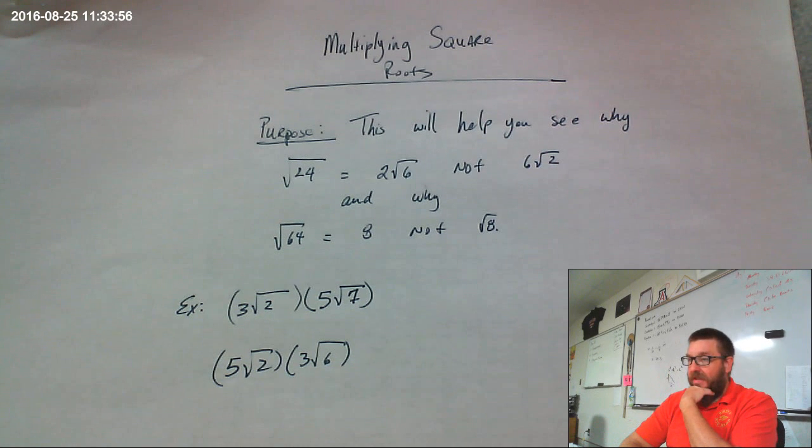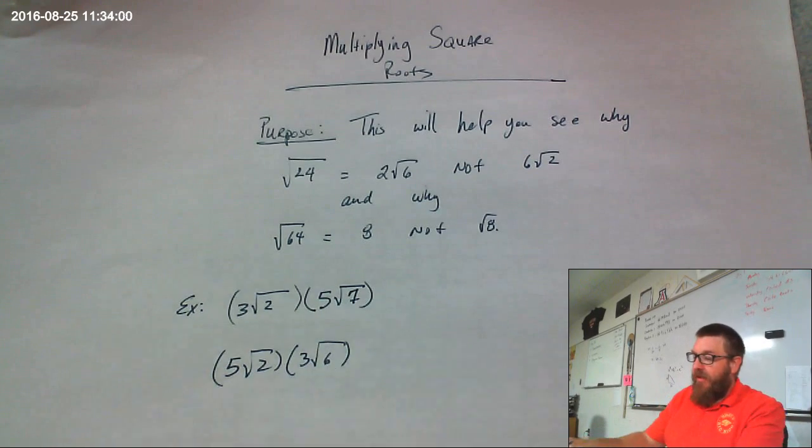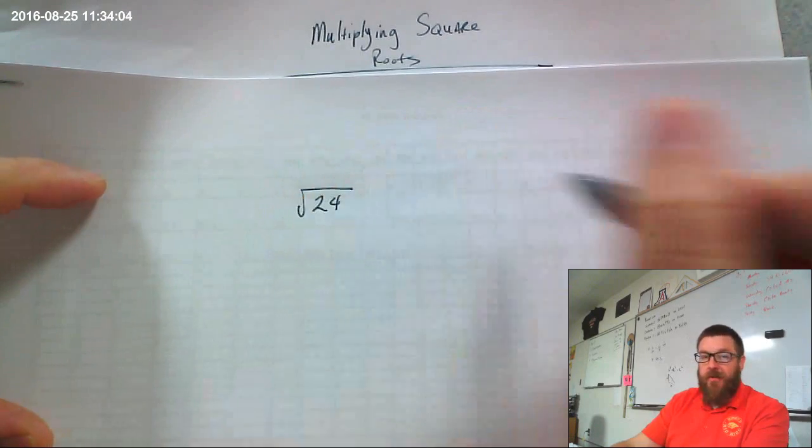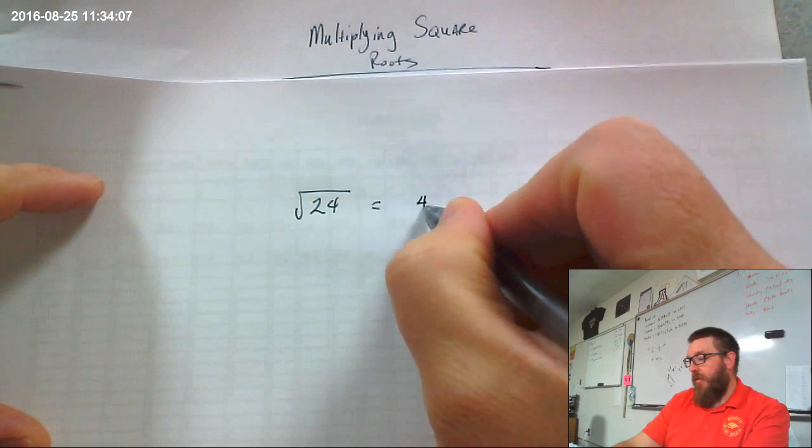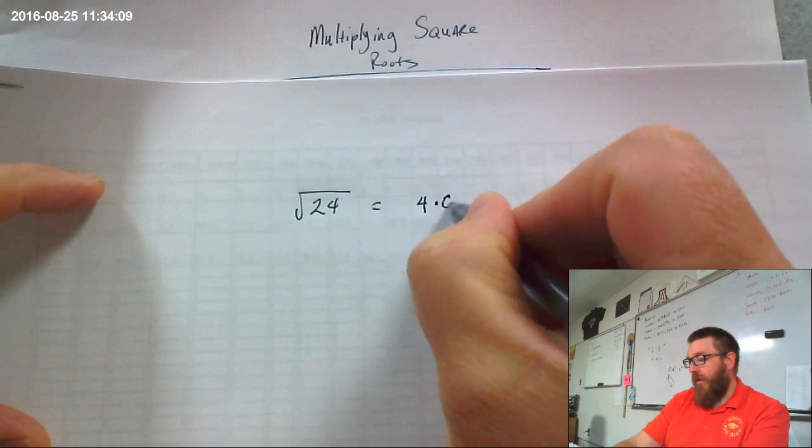So on a quiz I just gave out to students, there were a lot of mistakes. For example, like let's say it was the square root of 24. Students would write out that's 4 times 6.